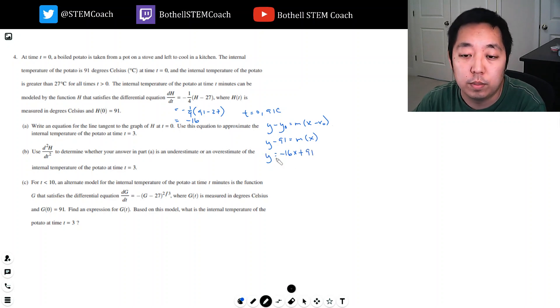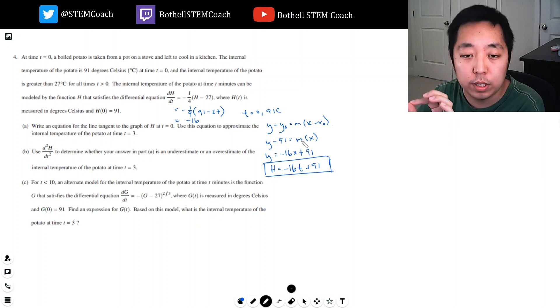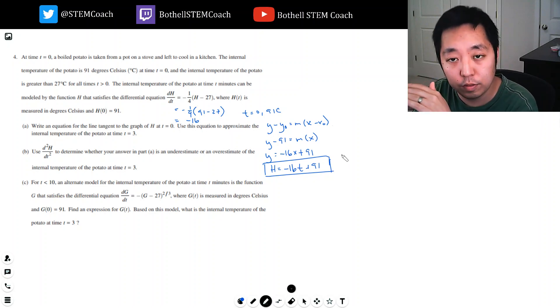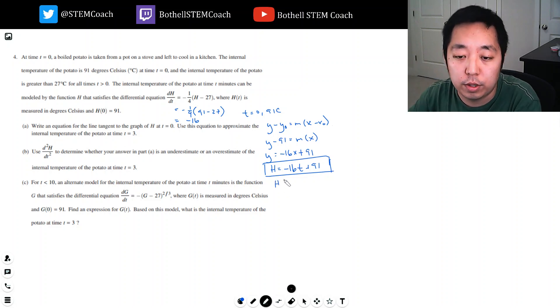In terms of the letters that they want, it's really h equals negative 16t plus 91. That's the equation, the linear approximation tangent line. The tangent touches that point and has the same slope at that point. We're going to approximate at three, so h(3) would be three times 16, which is minus 48, plus 91. So h(3) would equal 43.